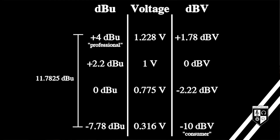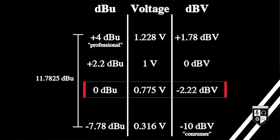You may intuitively think that plus 4 dBV is 14 decibels greater than minus 10 dBV, but unfortunately it's not that simple. The difference between them is actually around 12 dBV. That's because they don't share the same 0 dBV reference point. 0 dBV is equal to 1 volt, while 0 dBu is equal to 0.775 volts. To learn more about decibels, watch this video.